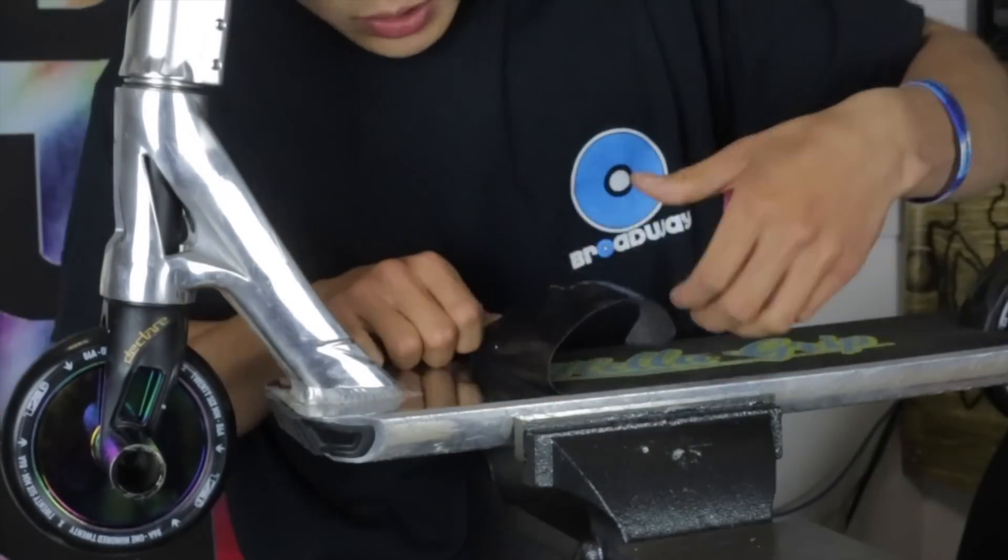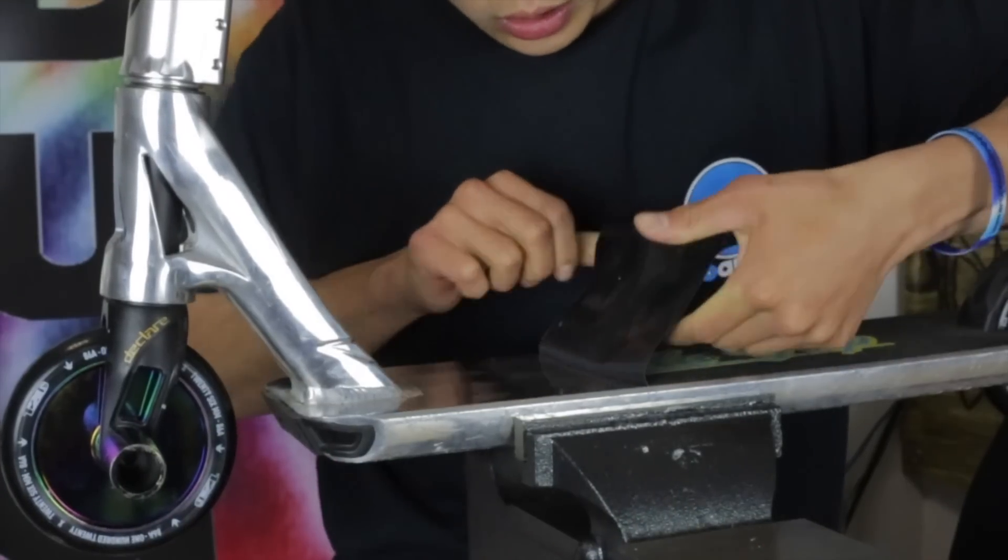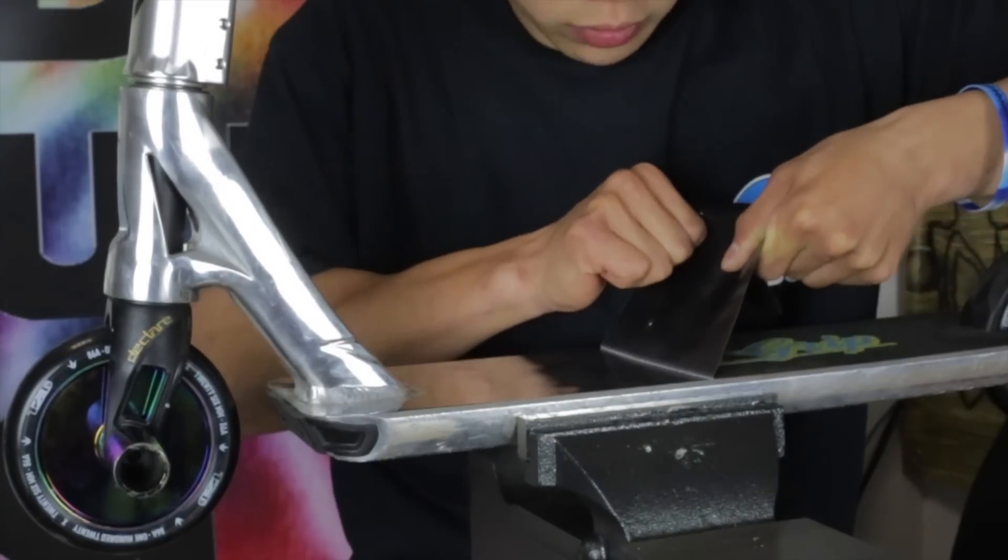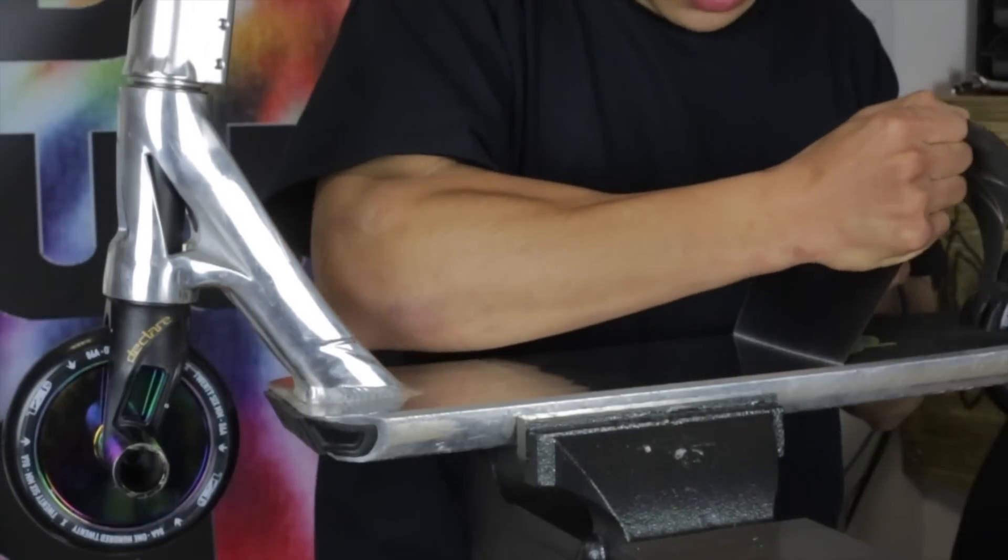If your old grip tape is really stuck on there, what you can also do is get a hair dryer, just go over your deck a couple of times and it will come off really easy.